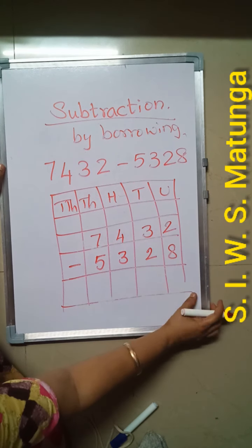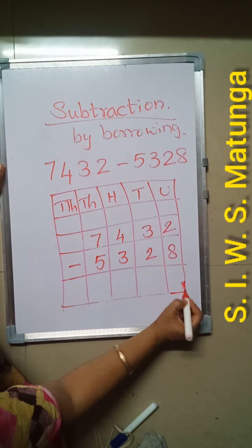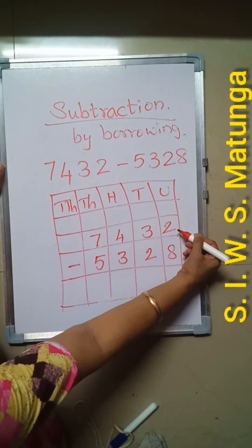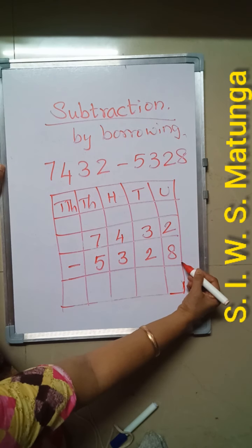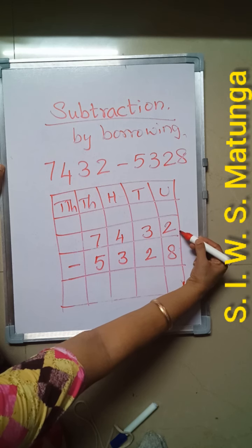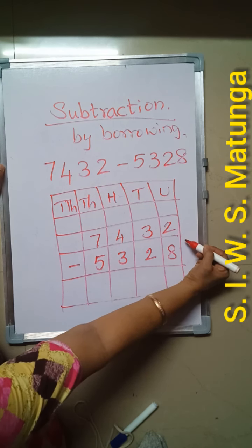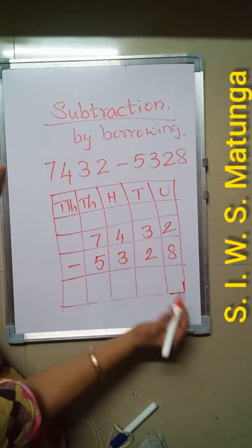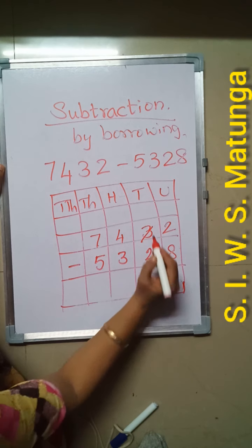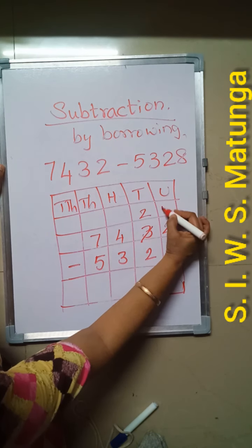Listen carefully. We have to subtract starting from the units place. In units place, the first number is 2 and the second number is 8. When the second number is bigger than the first number, you are not able to subtract. So you have to borrow one 10 from the next number — the tens digit 3. Cut that: 3 minus 1 gives you 2.